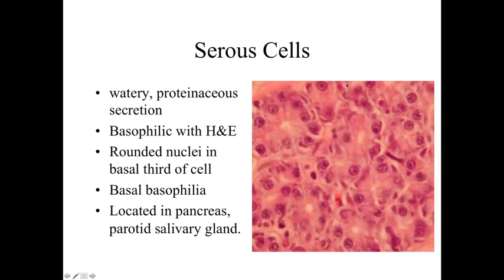The next type are serous secreting cells — in secretory clusters in little gland-like regions. Serous secreting cells produce a watery proteinaceous solution, secreting protein. They're going to be basophilic with hematoxylin and eosin due to basal basophilia. Looking at it: a space, lining cells with round nuclei, basophilic staining, lots of rough endoplasmic reticulum, and often a lighter-staining appearance towards the apex of the cell — closer to the lumen — where the secretory vesicles holding the secretory product are located. Serous secreting cells are found commonly in the pancreas and the parotid salivary gland.